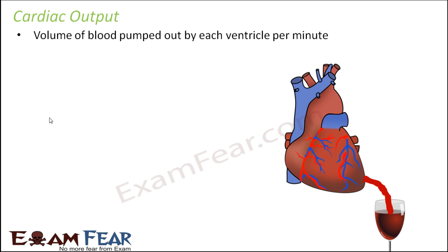Now let us talk about another important term: cardiac output. Whenever we talk about output we are talking about the net result of something. Cardiac output is the total volume of blood pumped out by each ventricle per minute. The heart pumps blood out through the ventricles, so how much volume of blood is pumped out by each ventricle in one minute — that volume is known as cardiac output.